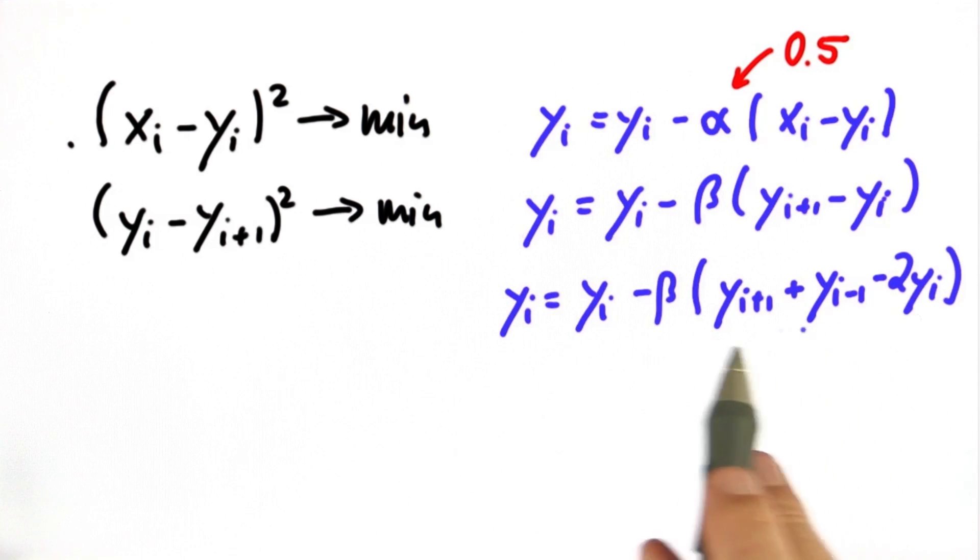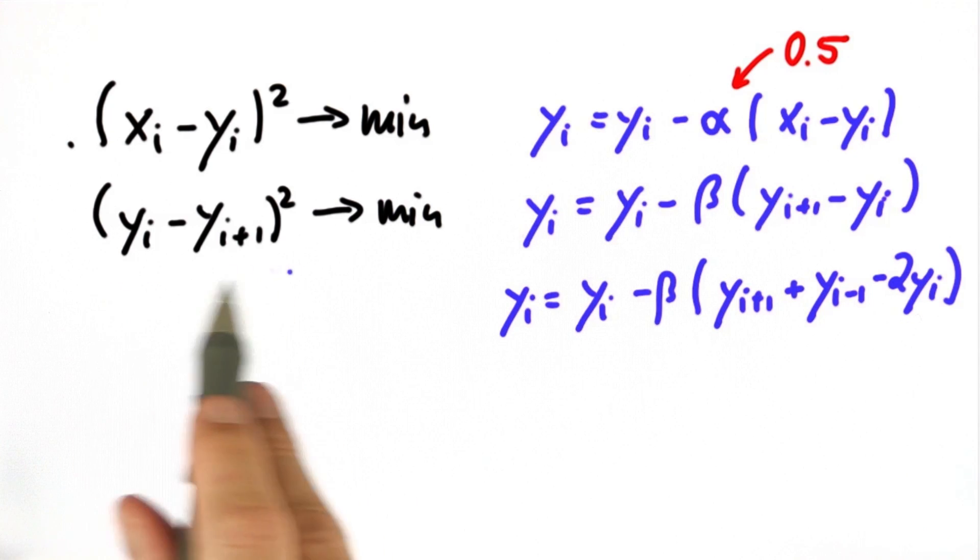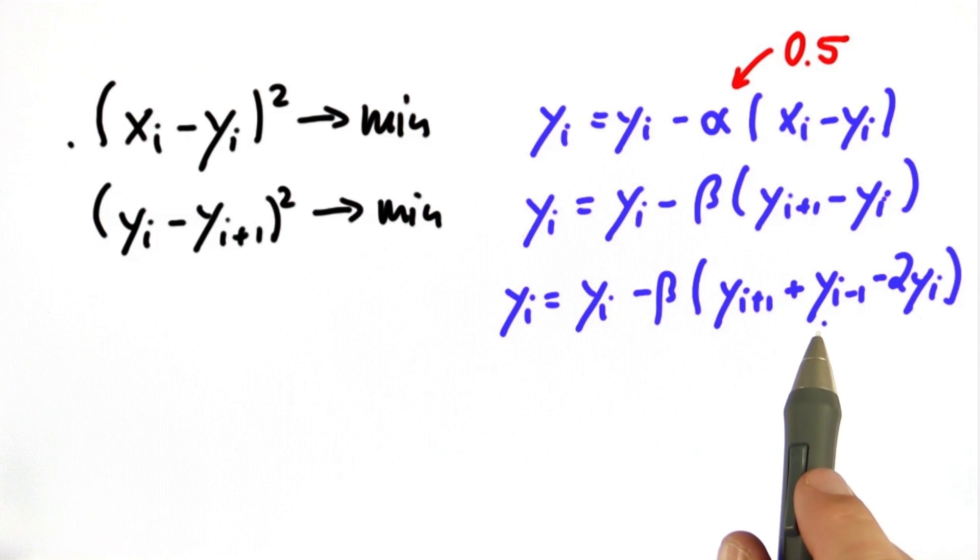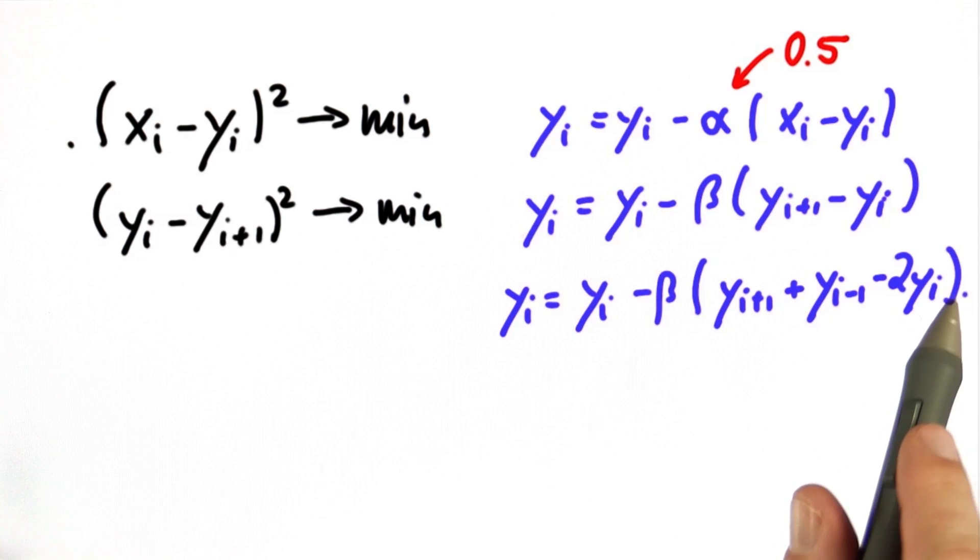This is combining the step on the left and the step on the right. Realizing that each yi occurs twice in this optimization term, one here and one here, we can now implement this in a single update rule where we wish yi to be as close to yi minus 1 and simultaneously be as close as yi plus 1 by optimizing this combined term.